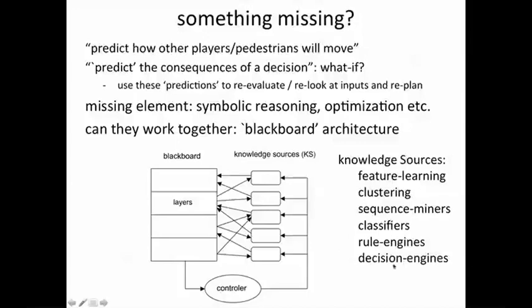They operate on a common blackboard. The lower-level data-driven knowledge sources might learn something about the world, like what features to look for, what the classes and rules are. Then higher-level rule engines might operate on these rules to perform reasoning, do planning, and take decisions. A controller looks at the blackboard and tries to figure out, based on what is available, what kinds of knowledge sources would be most applicable.